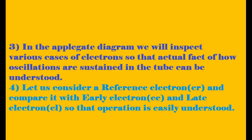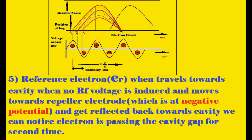The RF oscillations induced by noise or transients should actually die out, but they are sustaining to produce microwave oscillations — we will see how this happens. The reference electron travels toward the cavity when the RF voltage is zero; its position in the applicate diagram is at the zero crossover of the gap voltage. There is no effect of RF voltage on this electron, and it travels toward the repeller and gets reflected back toward the cavity.